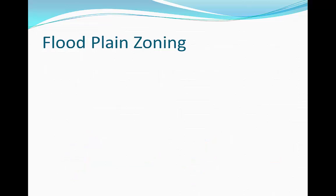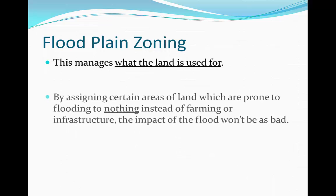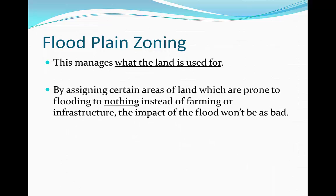Flood plain zoning manages what the land is going to be used for. By assigning certain areas of land which are prone to flooding — rather than putting in buildings or farming — the impact of the flood won't be as bad. So essentially, you leave nothing in that area; it will flood, but it won't affect anything. That's another soft engineering technique you can use.